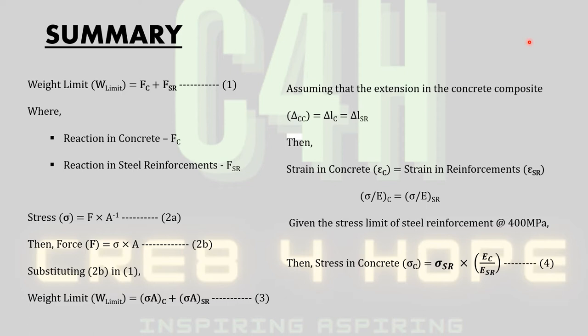Then that goes on to state that the strain in the concrete, epsilon C, is equal to the strain in the reinforcement, epsilon SR. So since strain is equal to the ratio of the stress to the Young's modulus, then this can equate to sigma divided by EC is equal to the ratio of sigma to the Young's modulus of the steel reinforcement. Since we've been given the stress limit of the reinforcement to be at 400 MPa, then we can make the stress of the concrete the subject of the relationship.